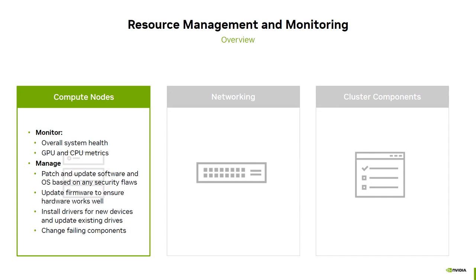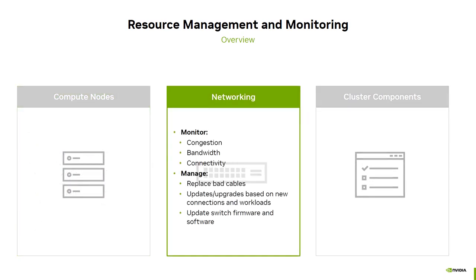For the compute nodes, the overall system health should be monitored as well as metrics on any special hardware like GPUs. Management tasks include installing patches and updates for security flaws, keeping the firmware up to date, installing and maintaining drivers, and replacing failing components. Network congestion, connection quality, and connectivity across the network should also be monitored. This provides information on possible network issues like cable degradation or lost connections that could require changing out faulty cables.